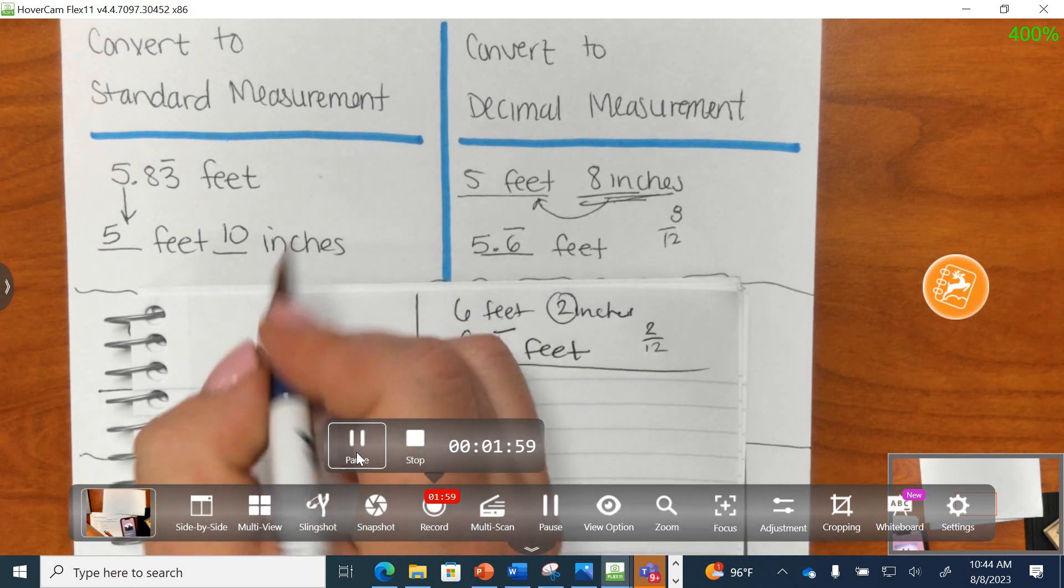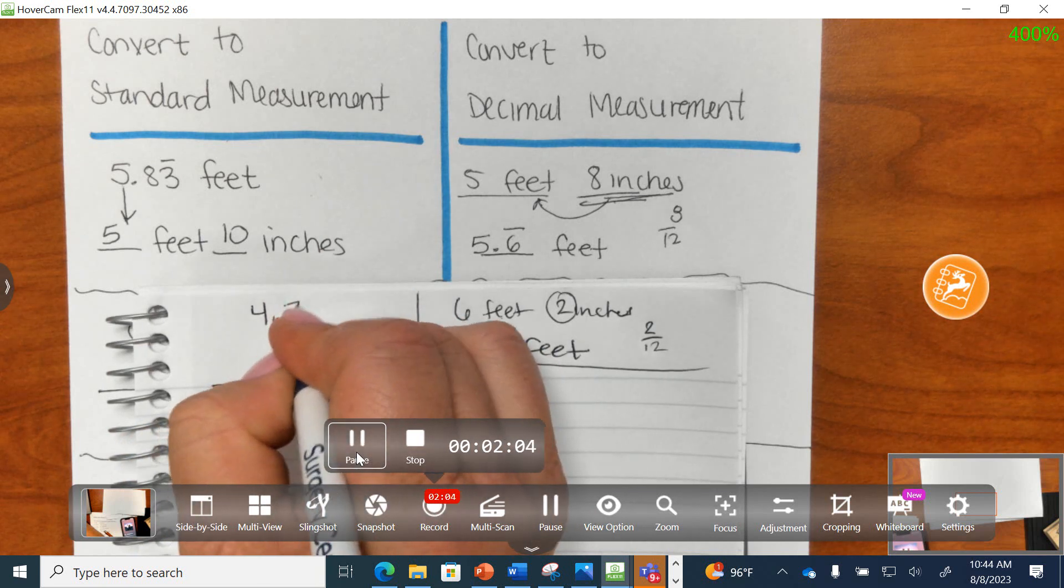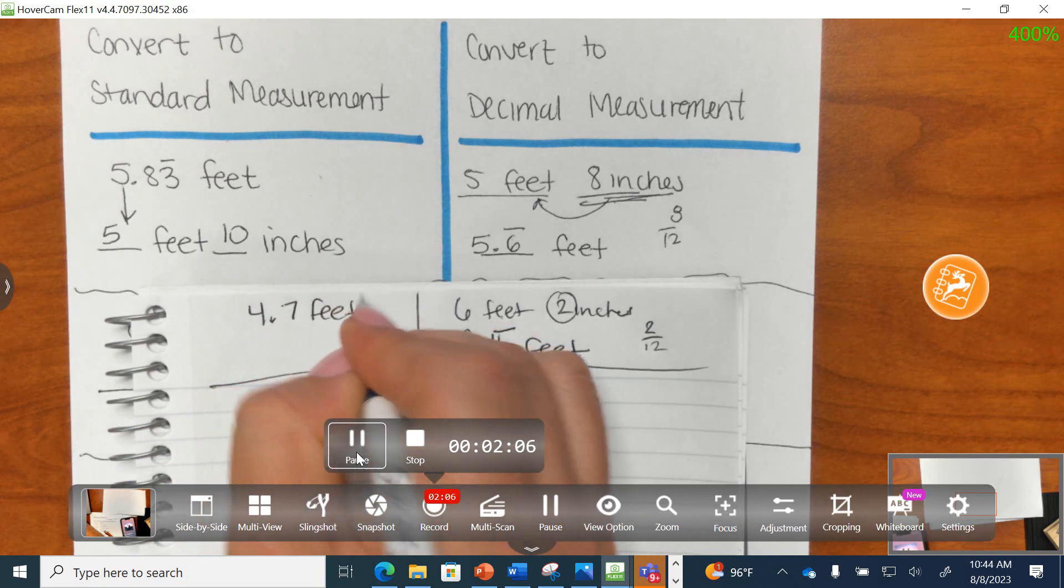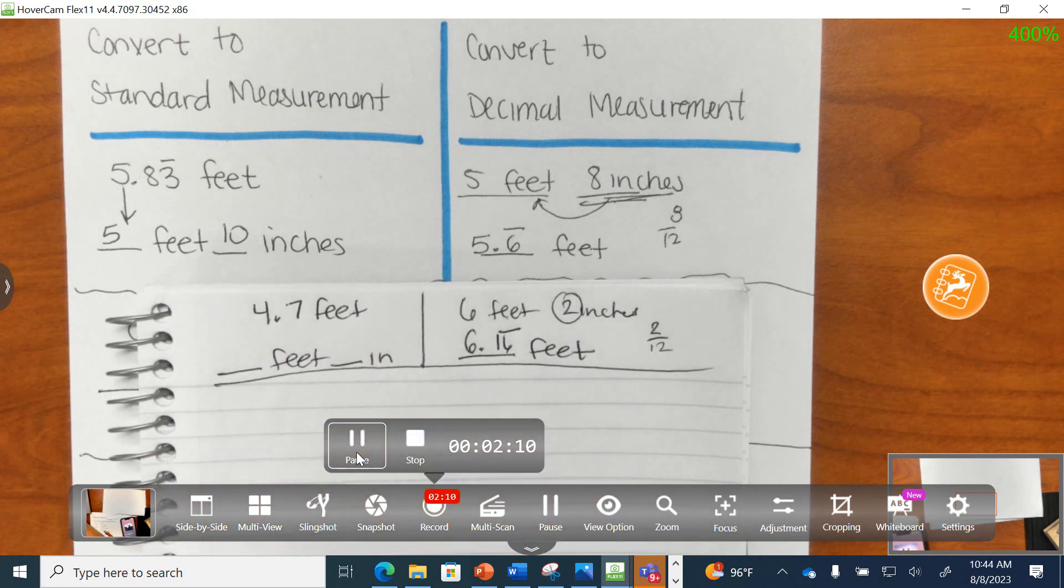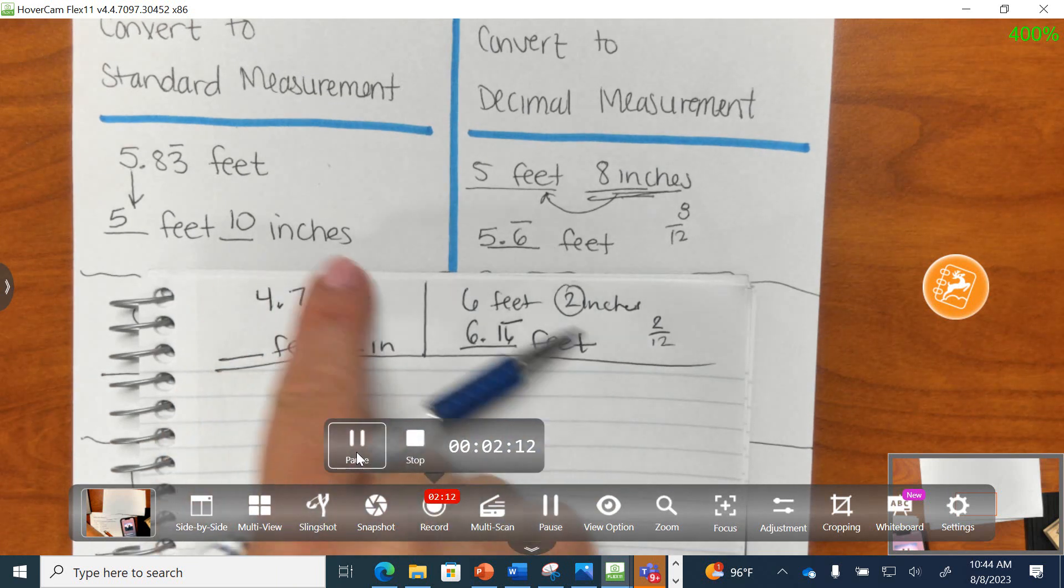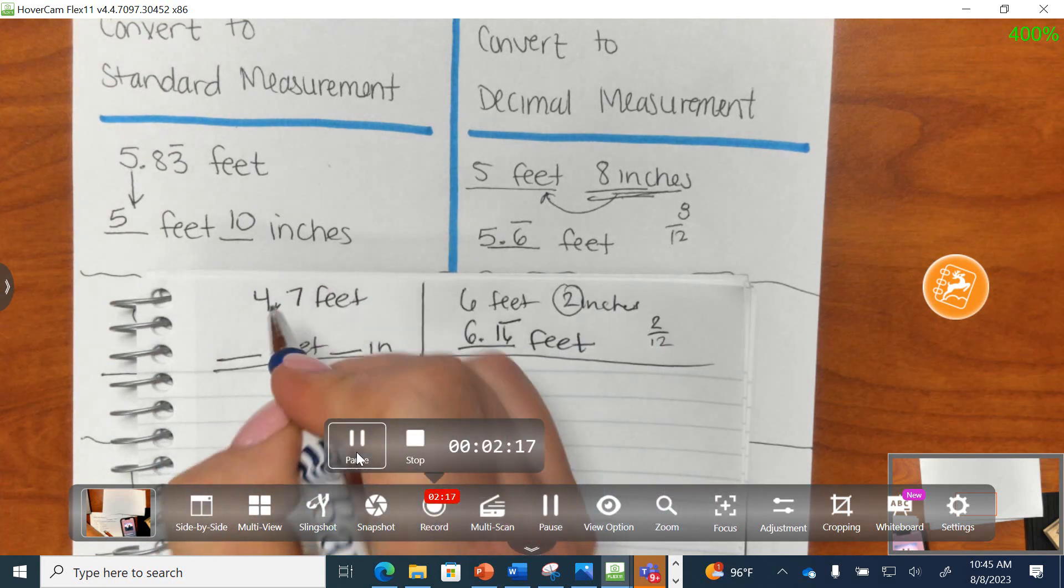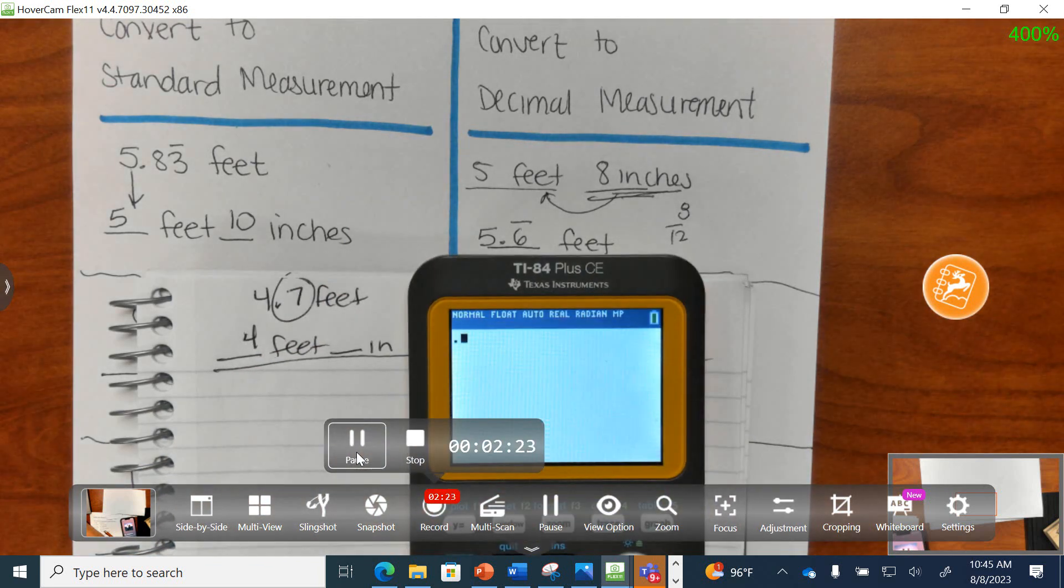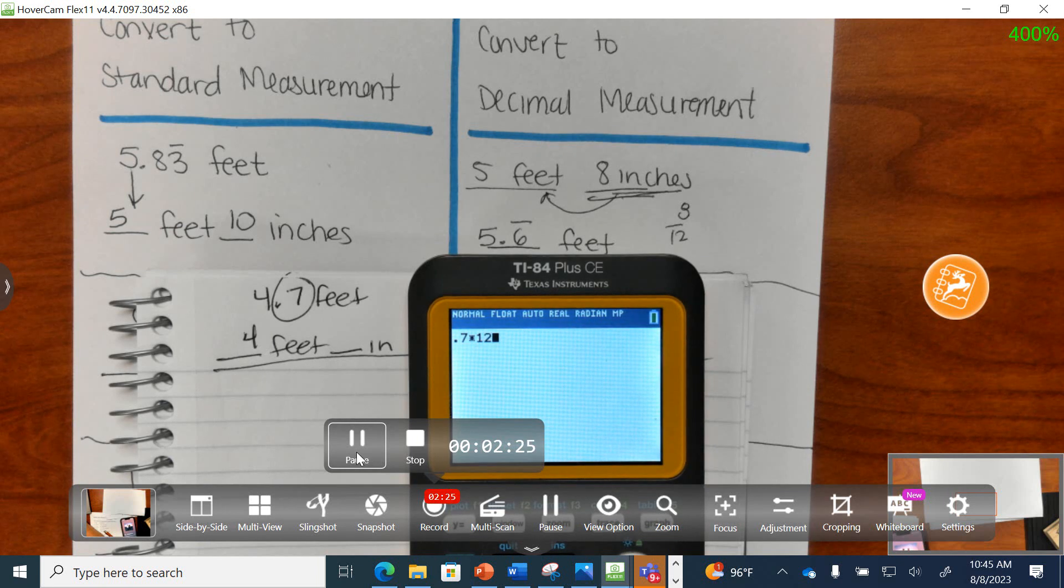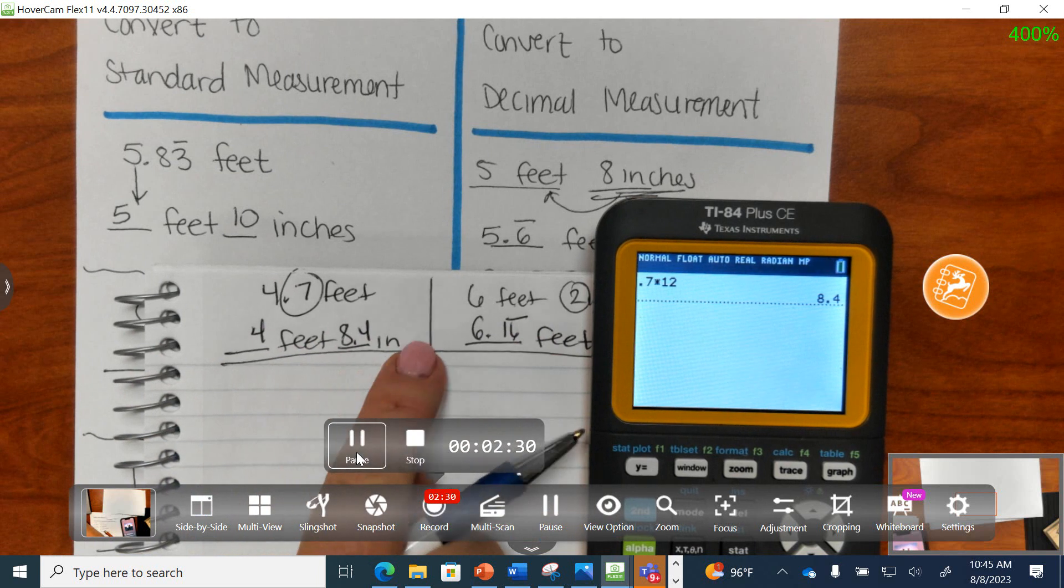Let's go to the next one. If I tell you that we measure something and it is 4.7 feet, and we want to convert it now into standard form. What would this be? On your own, 30 seconds. To convert here, I know there are 4 feet. And now I need to take this 0.7 and convert it into inches. I know there are 12 inches in 1 foot, so I take 0.7 times 12, and I end up with 8.4. So, 4 feet, 8.4.